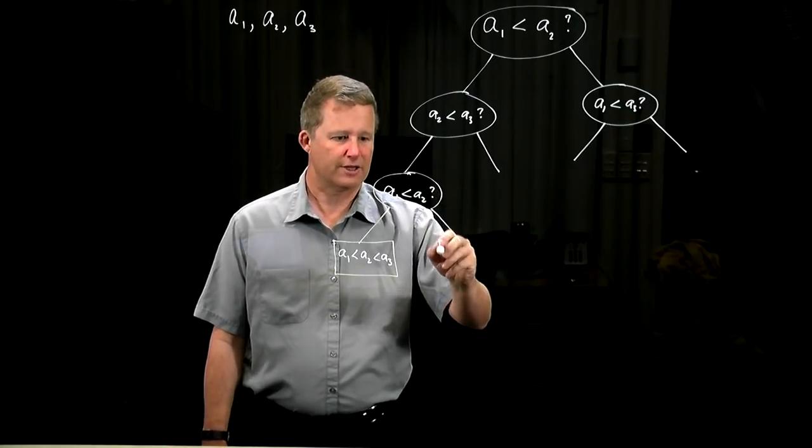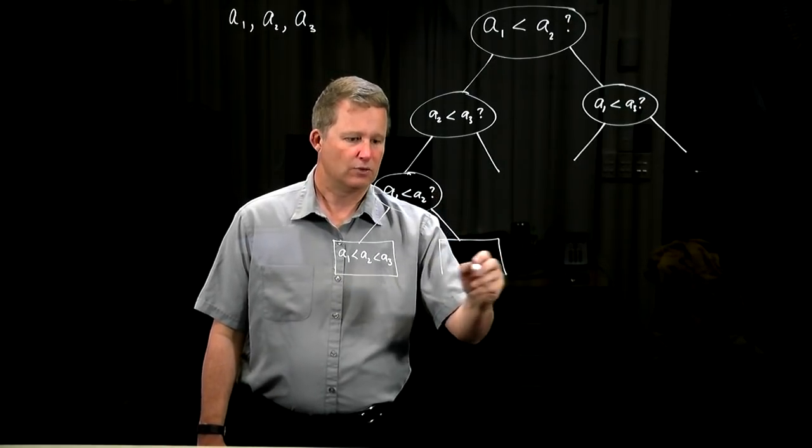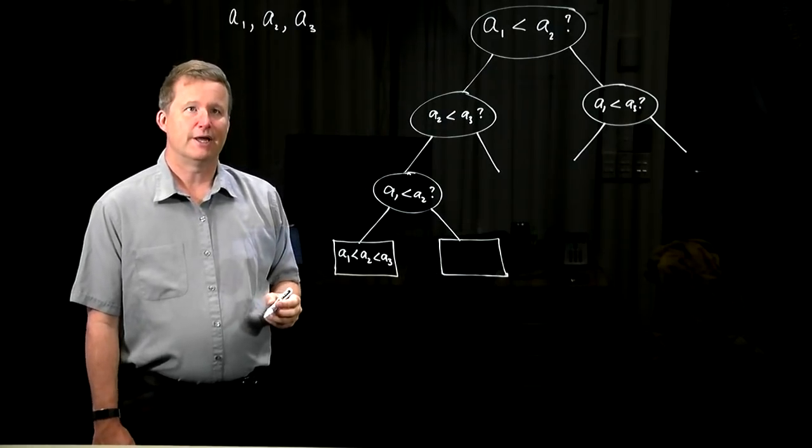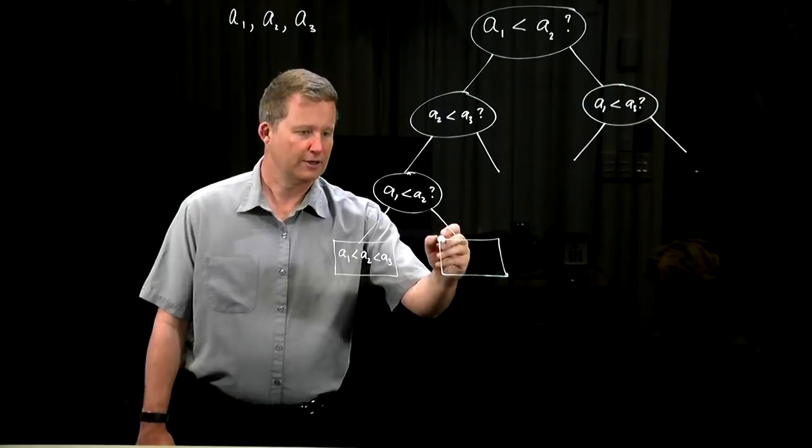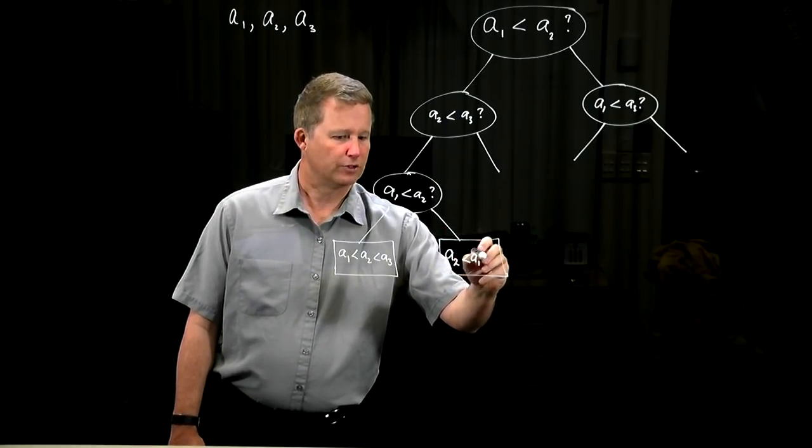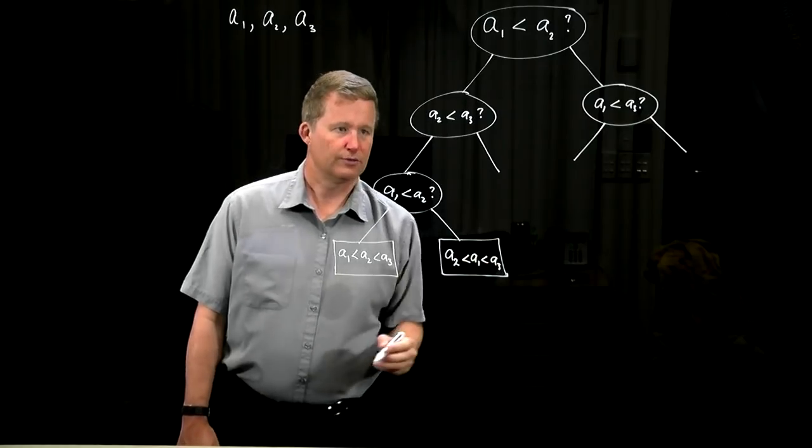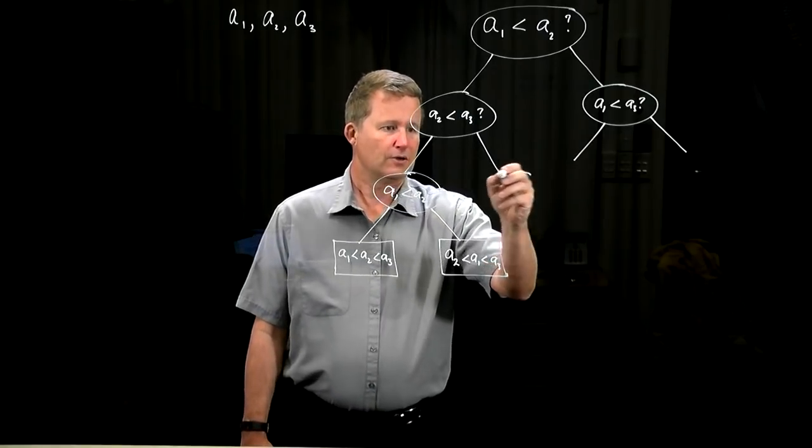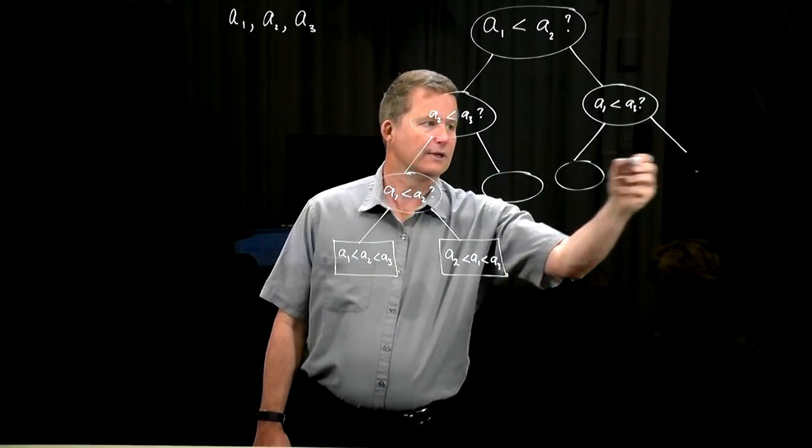On the other hand, if it turns out that a1 was not less than a2, so a1 was bigger, then a1 would be the maximum. We'd switch that in to its position. We wouldn't have to do any more comparisons, but we would have concluded this. And similarly, we can fill in here, here, and here.